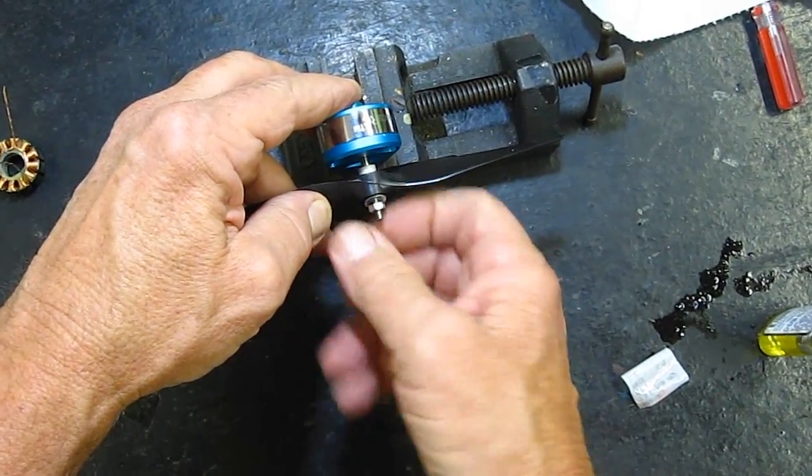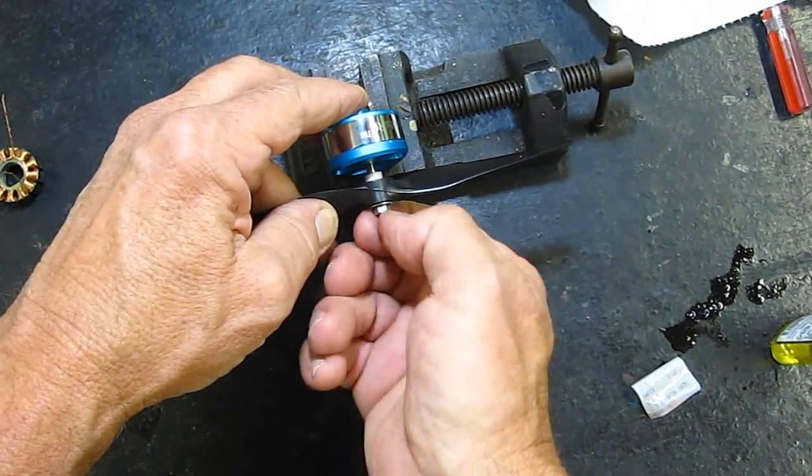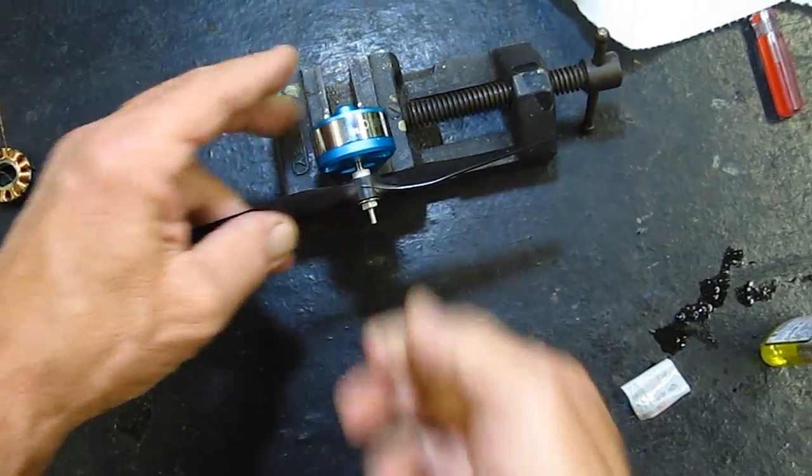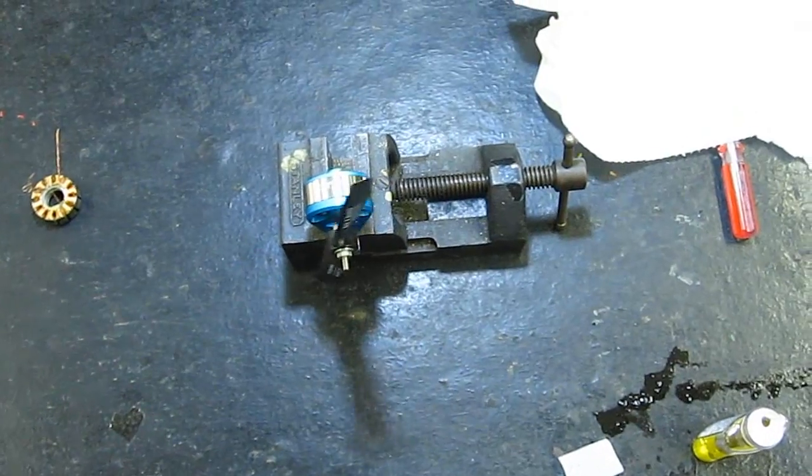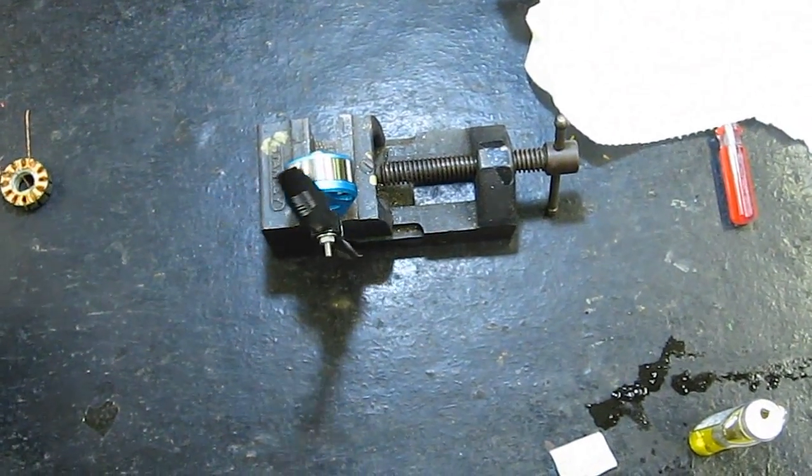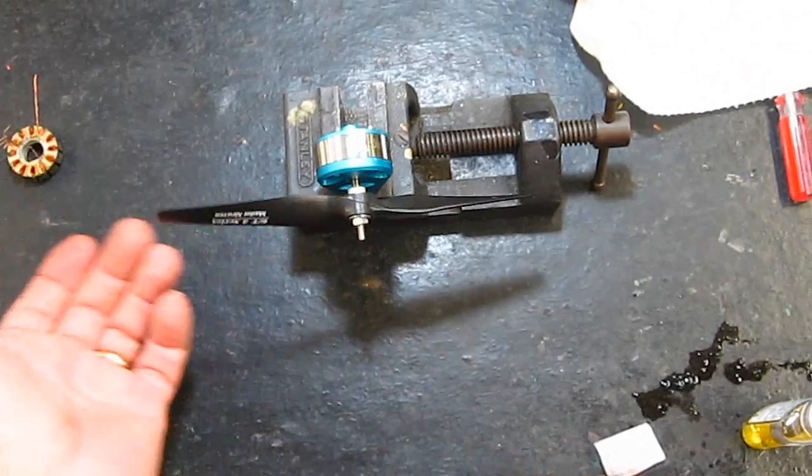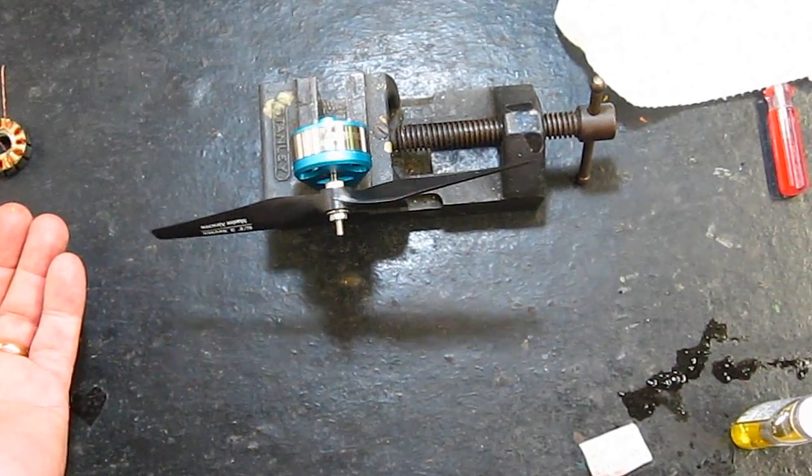This also gives good fit, as any slop in the shaft also makes for unbalanced. And now when I let go, see the heavy side. And the heavy side—I mean, this one makes a great prop balancer.